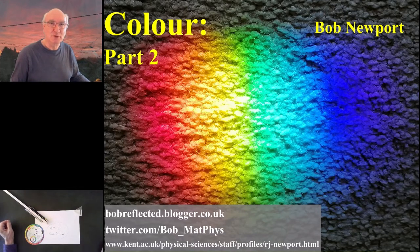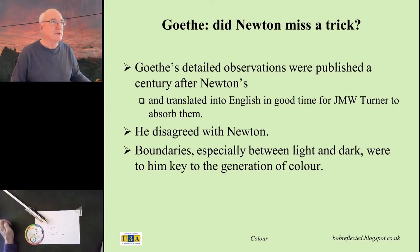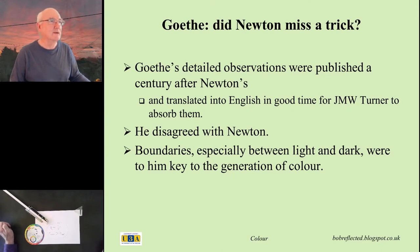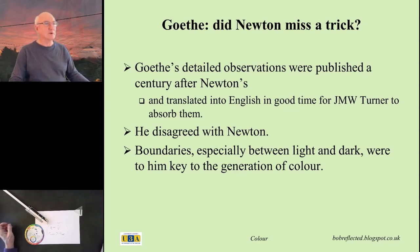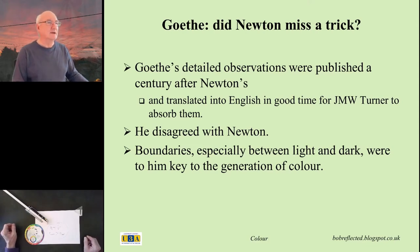Welcome back, here we are at part two and we're going to take our look at colour a little bit further. I mentioned Johann Goethe right at the beginning of part one and this is a good point to turn to Goethe's work and have a peek at what makes him so profoundly different in his interpretation of colour to Newton's very physical science approach. As I said in part one, Goethe's work when translated became a favourite of JMW Turner, and you can see the effect of Goethe's philosophy of colour in Turner's paintings.